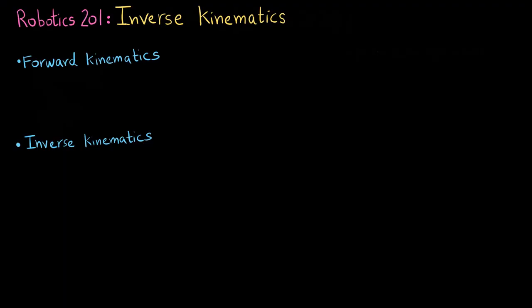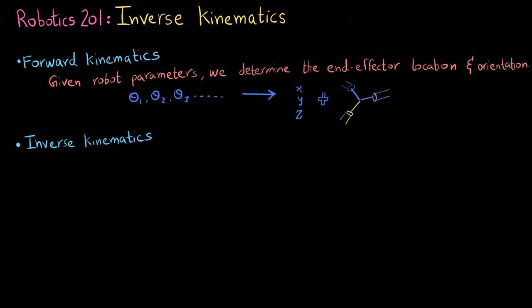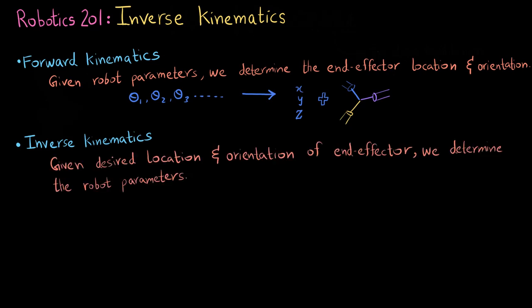To recap what we have covered so far: forward kinematics means you are given the robot parameters — the motor angles theta 1, theta 2, theta 3, however many motors — and you determine the end effector location XYZ and its orientation. Inverse kinematics is exactly the reverse: you have the desired location and orientation of the end effector and you determine the robot parameters. That is what we do in real life — inverse kinematics.